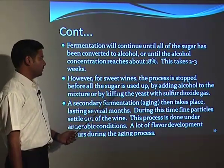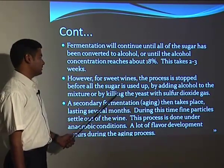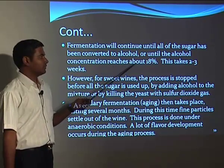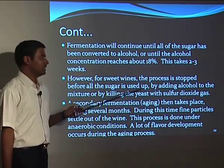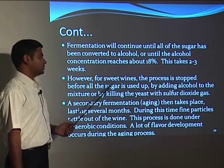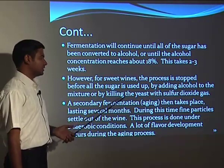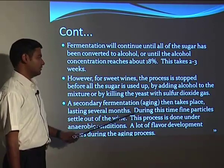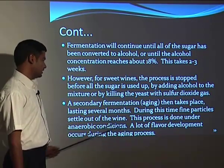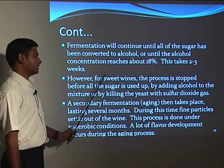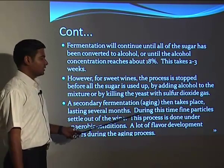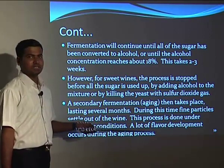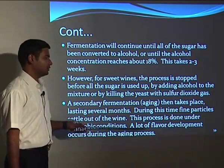For sweet wine, the process is stopped before the sugar is used up by adding alcohol to the mixture or by killing the yeast with sulfur dioxide gas. A secondary fermentation then takes place lasting several months; during this time, wine particles settle out of the wine. This process is done under anaerobic conditions, and a lot of flavor development occurs during the aging process — older wine is generally tastier.